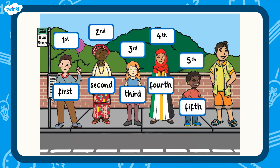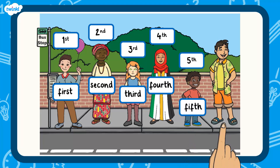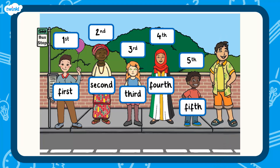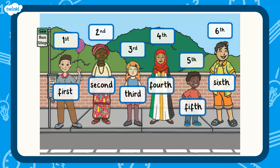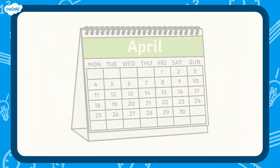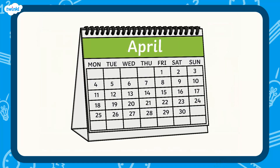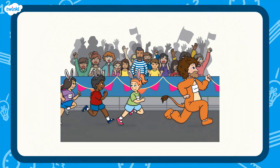And finally, the person at the end is in position 6, so they are sixth. They are last in the line. We use ordinal numbers and language all the time, like when we describe the date or to say where someone came in a race.